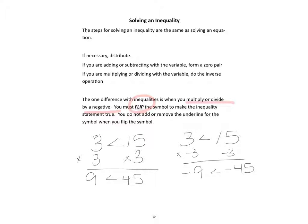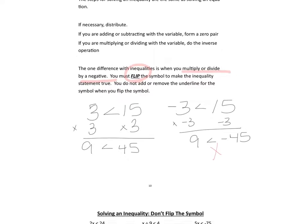Even more so, if we were to say negative three is less than 15, we could multiply both sides by negative three. Negative three times negative three is positive nine, whereas 15 times negative three is negative 45. We know that nine is not less than negative 45 — it's not true. So when you multiply or divide by a negative, you must flip the symbol in order to make that statement true.